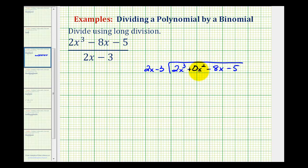Now to start this division, we're only concerned about the first term of the divisor and the first term of the dividend. There are two ways to find the first term in the quotient. We can ask, what times 2x would be equal to 2x cubed? If we know that would be x squared, that would be our first term.